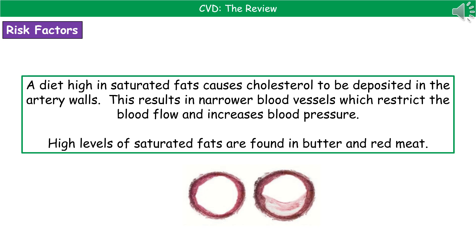The types of things you would typically eat on a high saturated fat diet are things like large amounts of butter or a very large quantity of red meat. So it's good to keep those in moderation.